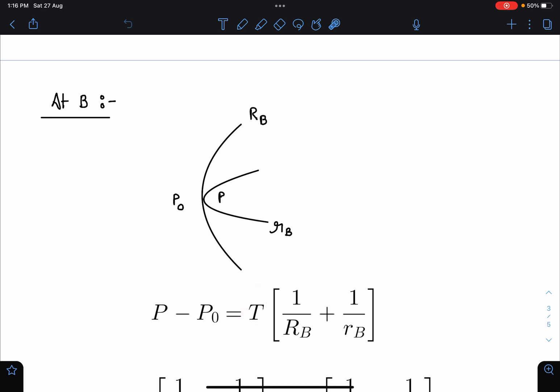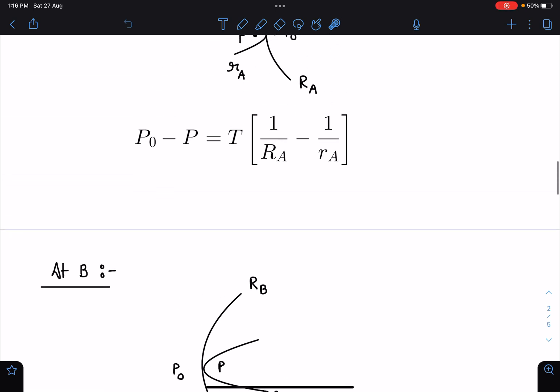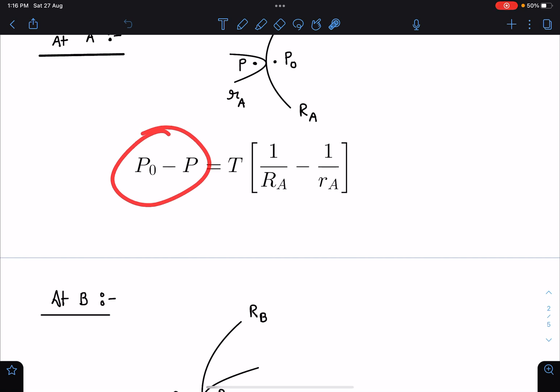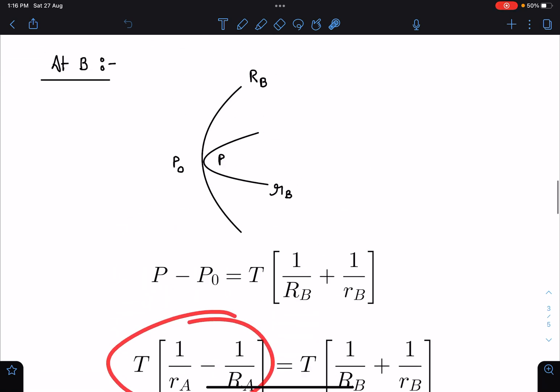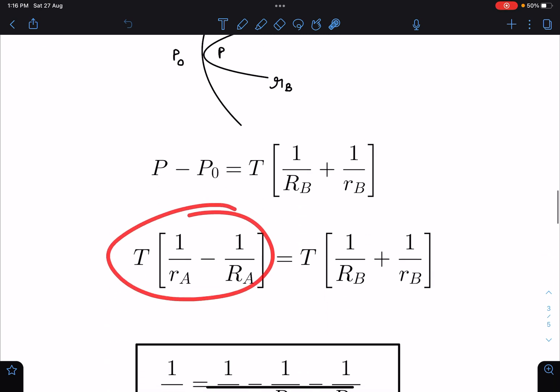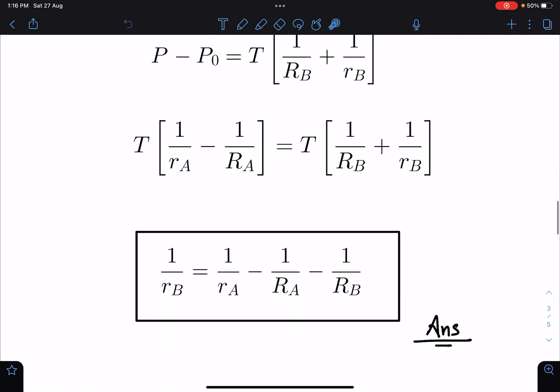So P minus P_0 and both are positive, so T times (1/R_B + 1/r_B). Now this P_0 minus P I can replace here with negative sign. So you can see T(1/r_A - 1/R_A). This T and T gets cancelled.